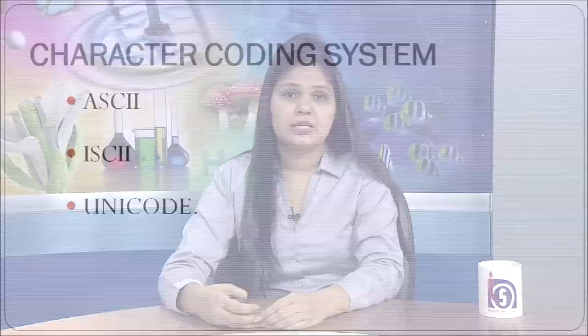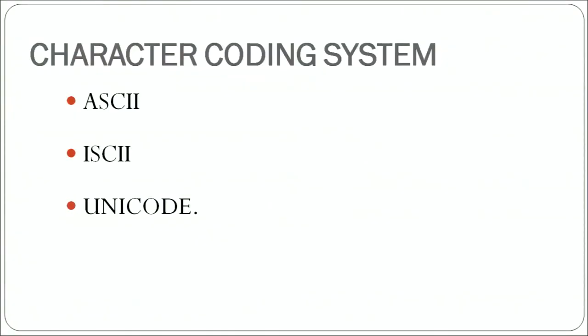Now we will talk about the character coding system. These are the three basic character coding systems that we use. The first one is ASCII, the second one is ISCII, and the third one is Unicode. We will talk about these one by one.